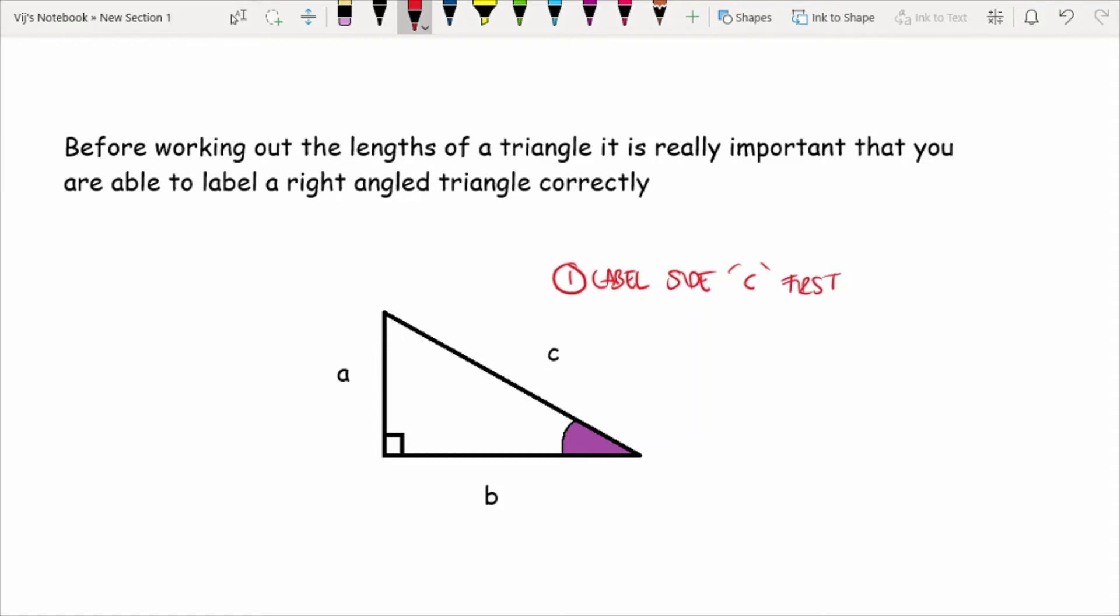Now, in a triangle, sometimes you might get your right angle drawn exactly how you can see on the screen. Sometimes it might be drawn like this. Sometimes it might be drawn like that, where the side is a little bit different. Or it could be drawn something like this, where it's slightly diagonal. Or it could be drawn something like this. And sometimes it could even be drawn as something like that.